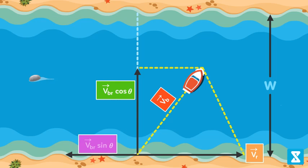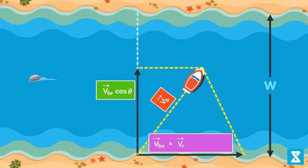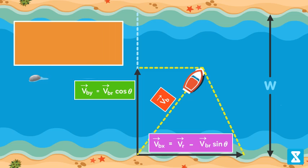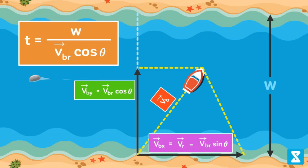Therefore, velocity of boat along x-axis VBx is equal to VR minus VBR sin theta, and velocity of boat along y-axis VBy is equal to VBR cos theta. Now, time taken by the boat to cross the river is given by T equal to width of the river W divided by VBR cos theta.